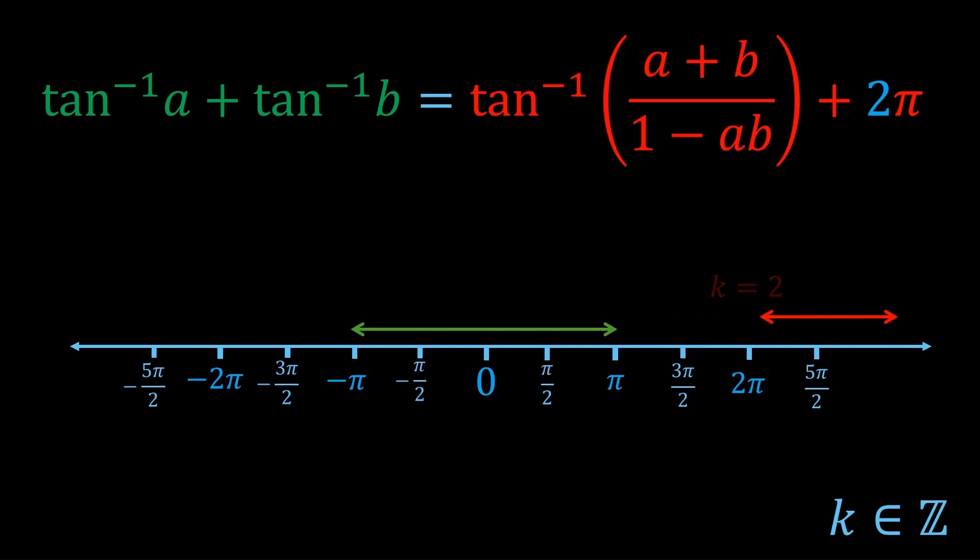Similarly, k equals 3 or 4, etc., it's just going to move further away. There's not going to be any overlap. So for k greater than or equal to 2, this is not a true equation.